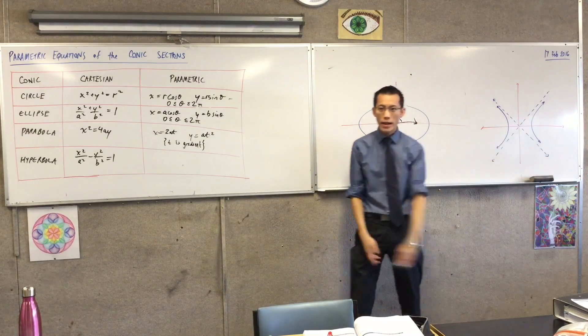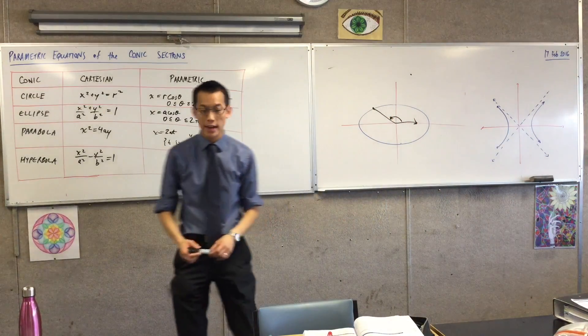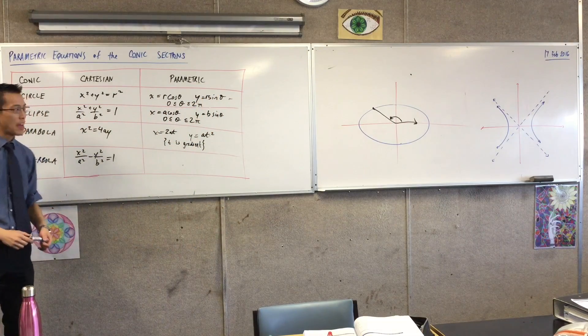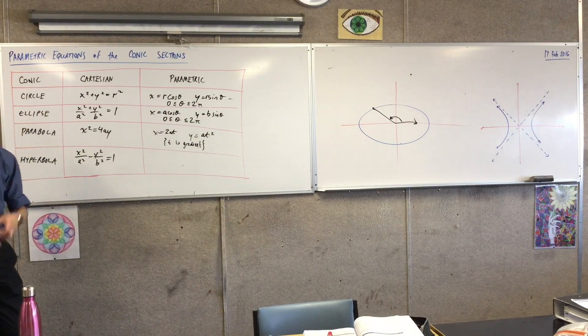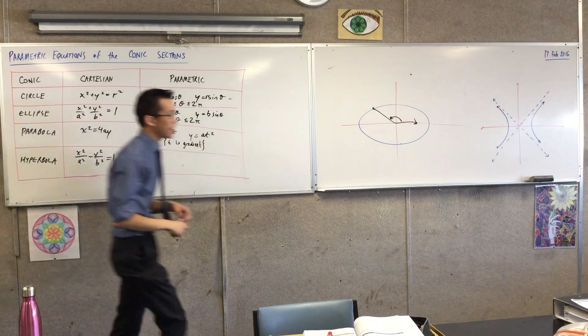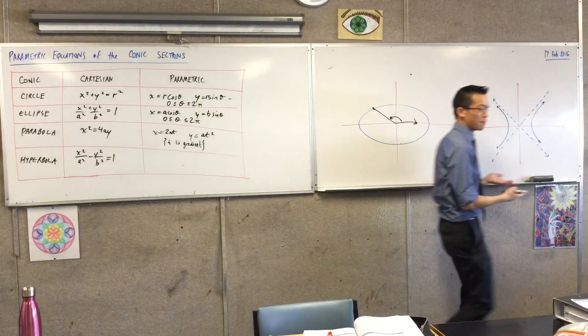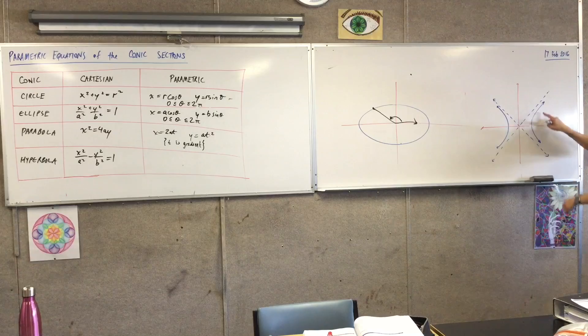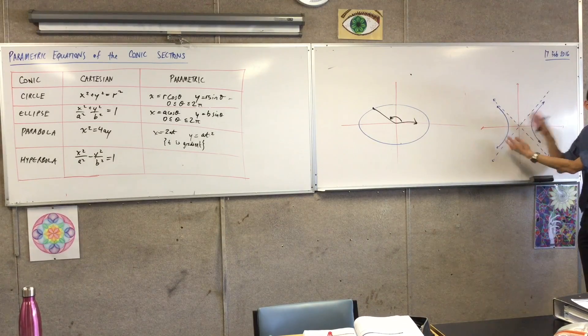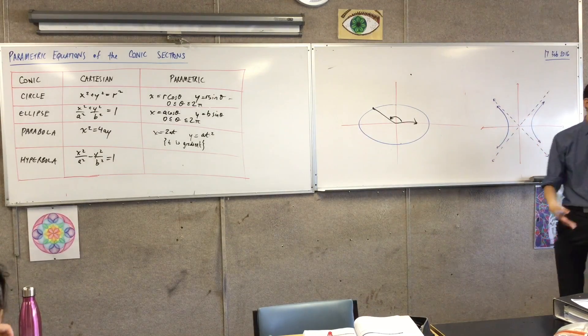You have a look at this. Is gradient going to be a good choice for defining where you are on the locus? And the answer is no, not really. Because of all the crazy symmetry that you've got, every point has a gradient, but it also has another point that shares exactly the same gradient on the opposite side in the other quadrant. So gradient's going to be no good.